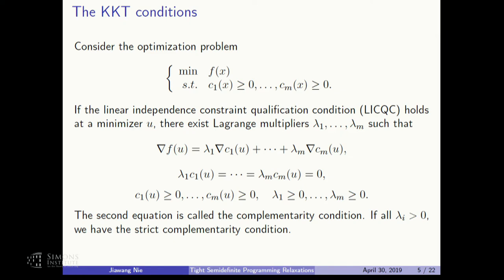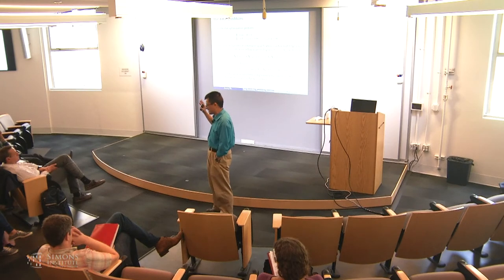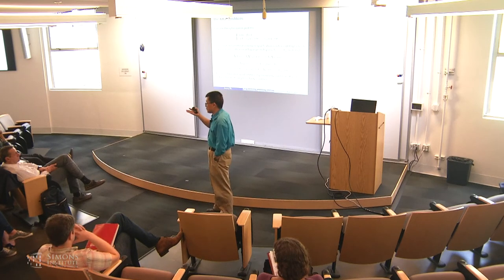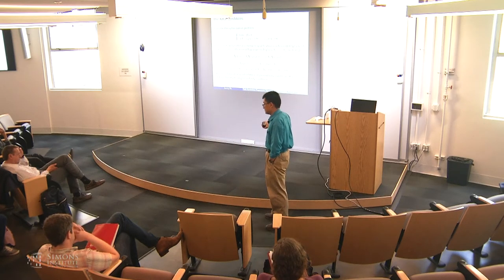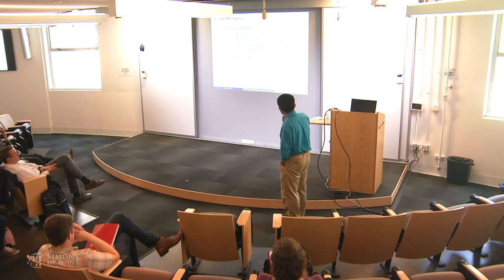If a constraint is active, then lambda may be positive; if the constraint is inactive, then lambda must be zero — the complementarity condition. With inequality constraints, Lagrangian multipliers are required to be nonnegative. For equality constraints, lambda can be positive or negative. Strict complementarity means: for every i, either lambda_i is positive or c_i is positive. We only care about inequality constraints that are active.